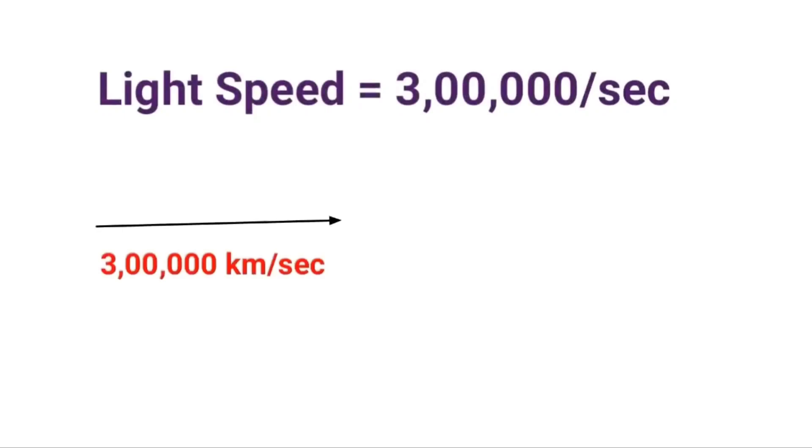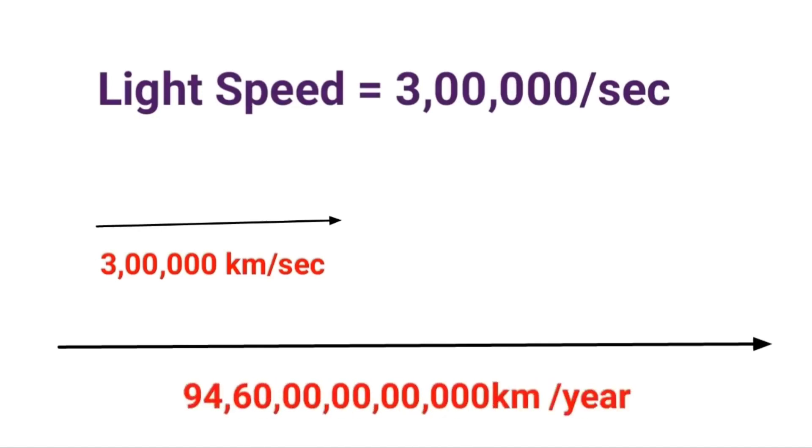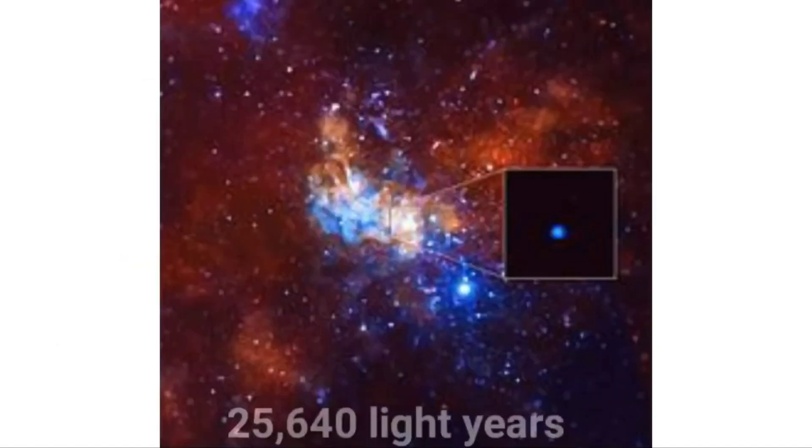Let's understand the light year. Light travels at a speed of 300,000 kilometers per second. So the distance traveled by this light in a span of one year gives us one light year. That is approximately 9.5 trillion kilometers per year. So this Sagittarius A star black hole is 25,640 light years away from our earth.